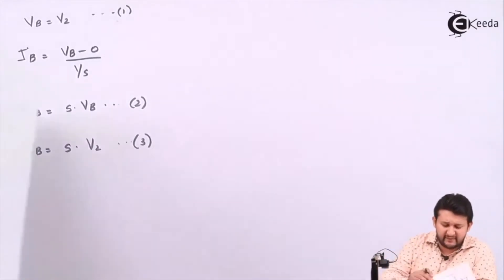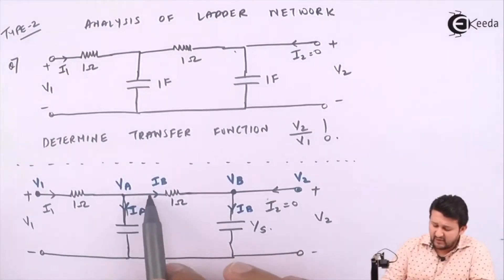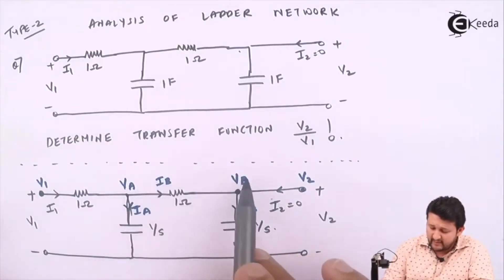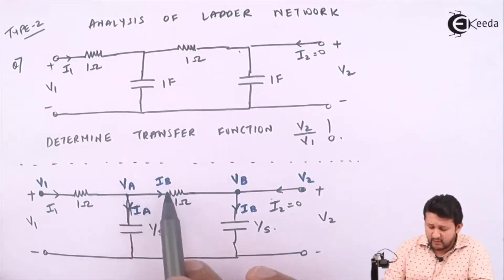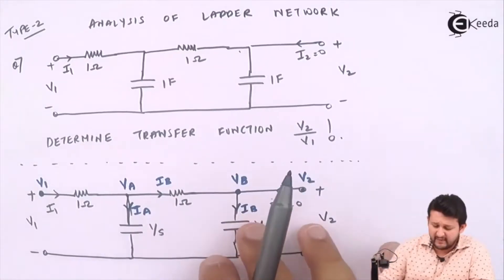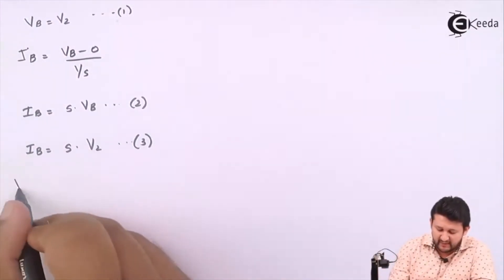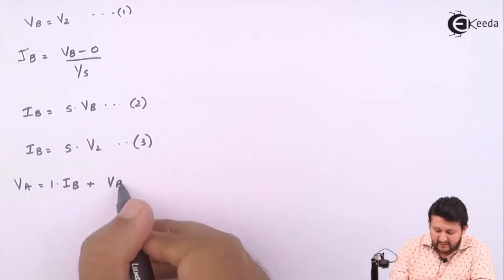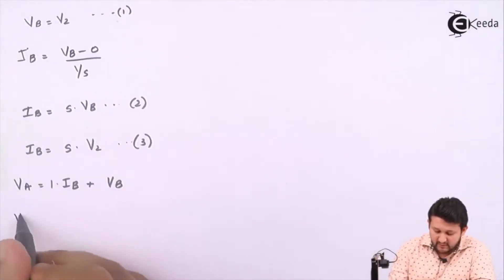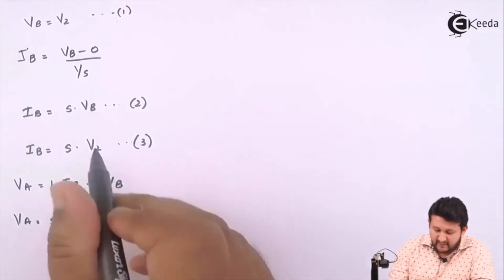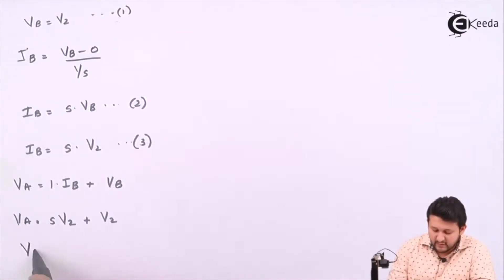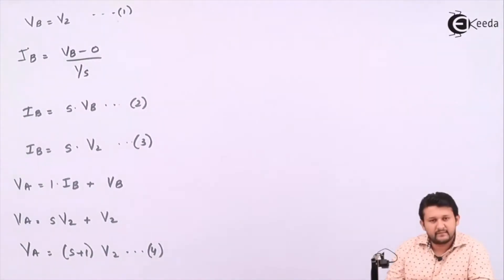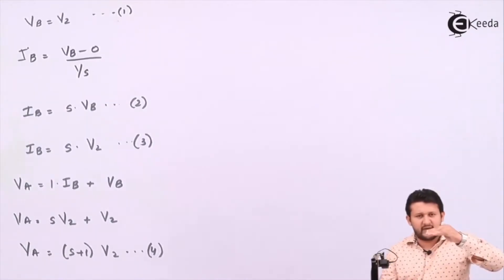Now let's talk about the horizontal path. For the horizontal path, I need to write an equation for voltage. It would be Va equal to 1 times Ib plus Vb. So Va equals 1 times Ib plus Vb. Substituting the value of Ib as S times V2, and replacing Vb with V2, Va equals S times V2 plus V2. Taking V2 as common, Va equals (S plus 1) times V2. That's equation number three from the horizontal path.